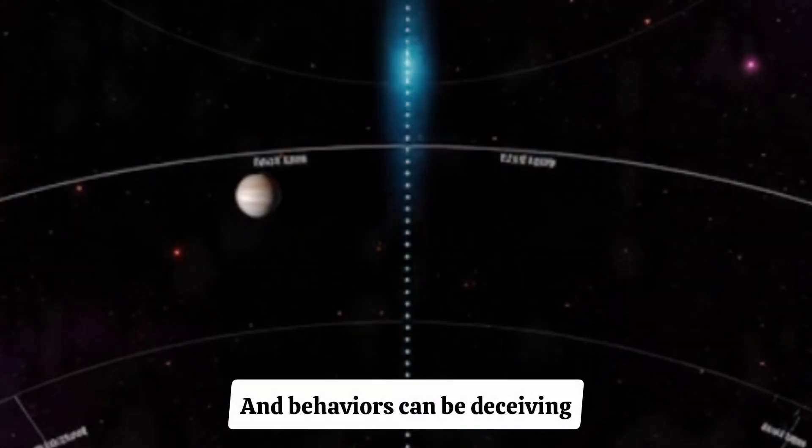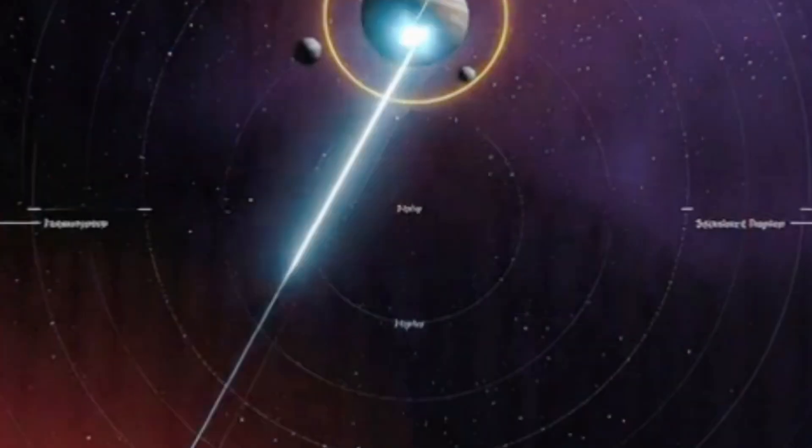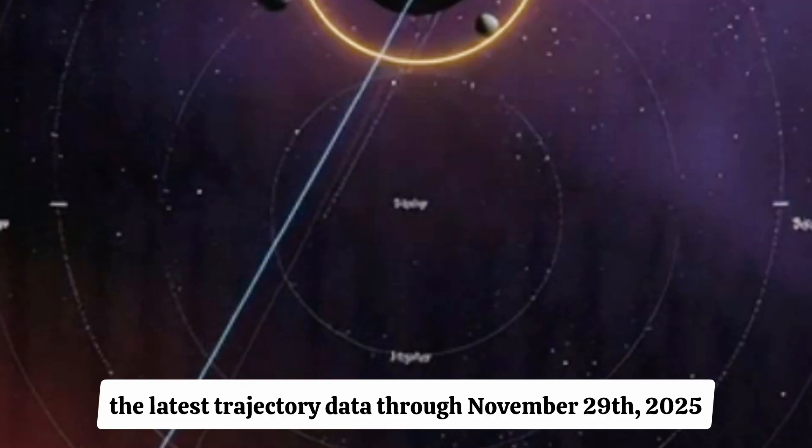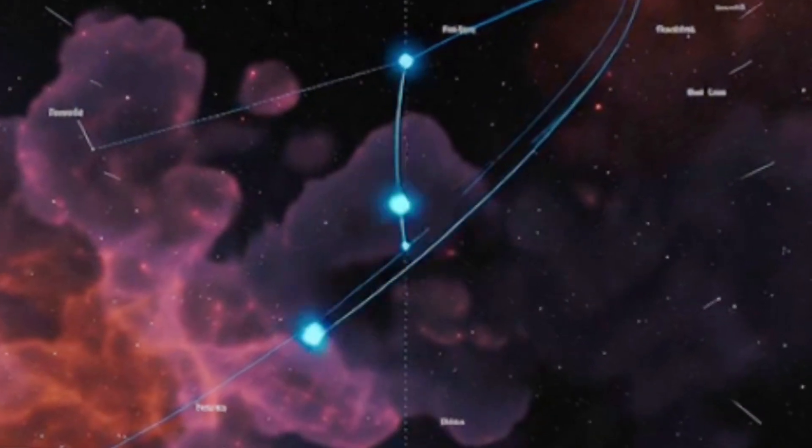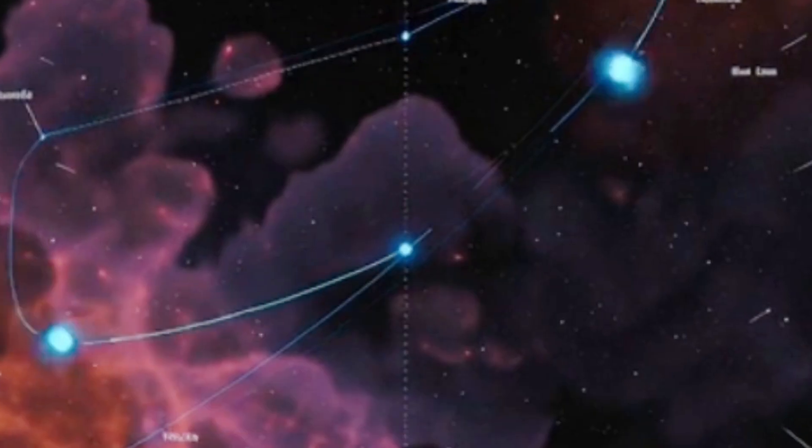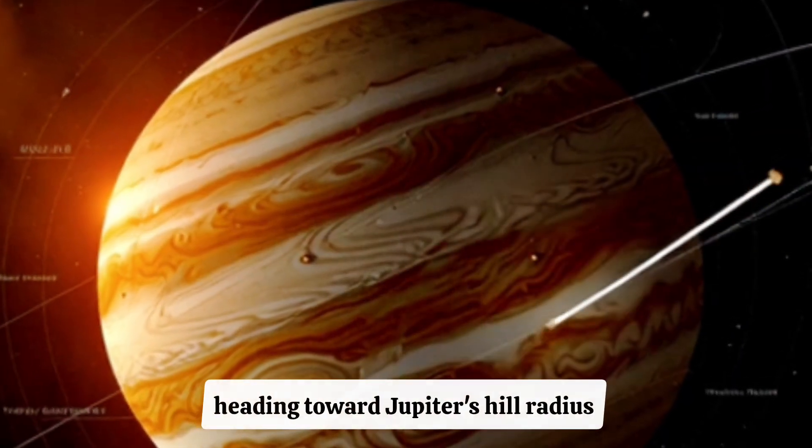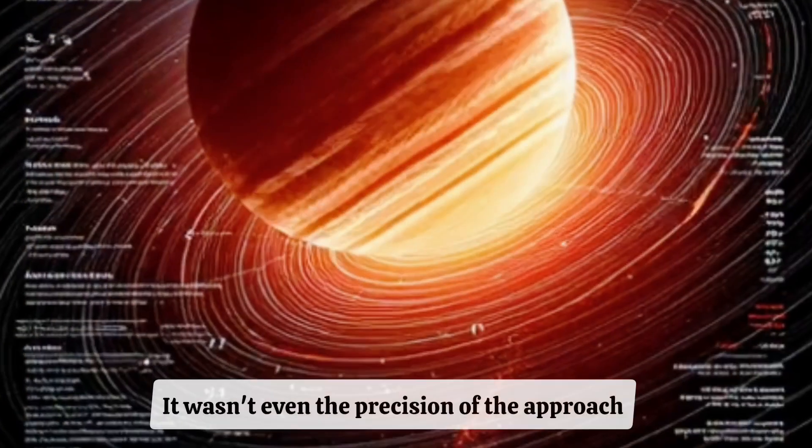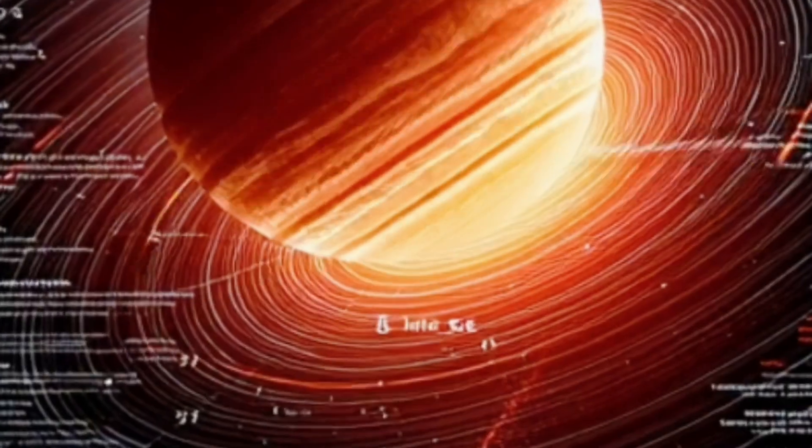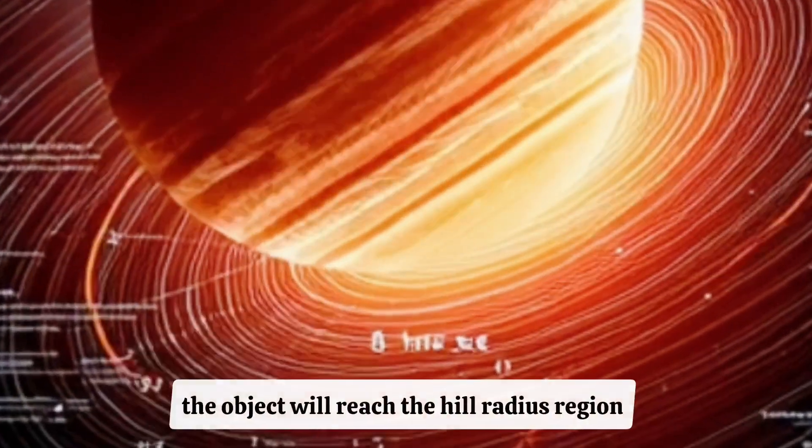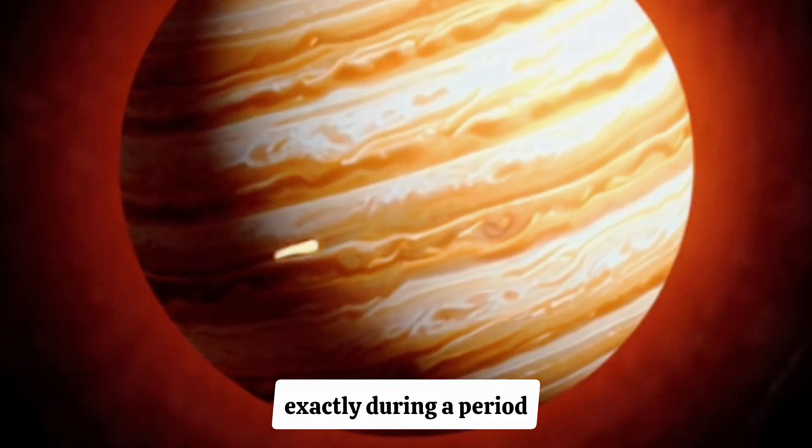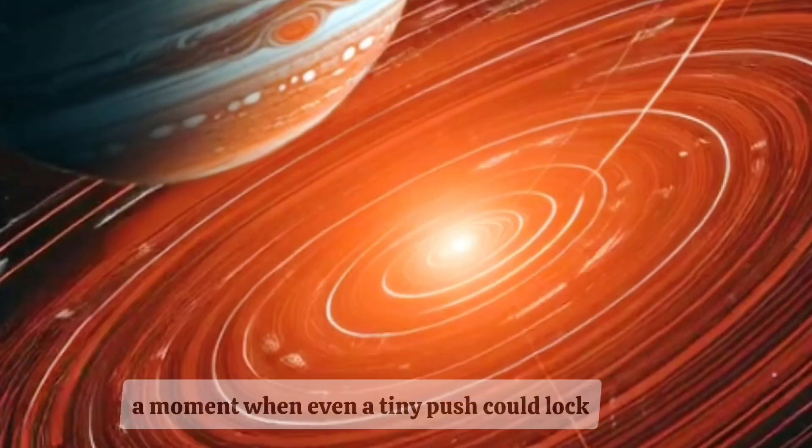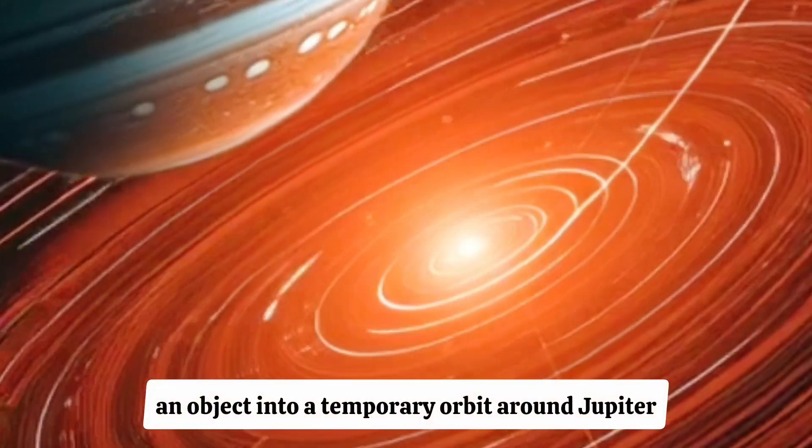And behaviors can be deceiving. But here's where things shift from strange coincidence to deeply concerning. Because as astronomers continued analyzing the latest trajectory data through November 29th, 2025, something emerged that wasn't in the earlier models. It wasn't just that 3i divided by Atlas was heading toward Jupiter's hill radius. It wasn't just that it performed a perfect 62,000-mile correction. It wasn't even the precision of the approach. It was the timing. Because based on the new velocity readings, the object will reach the hill radius region exactly during a period when Jupiter's gravitational alignment is ideal for what NASA calls a low-energy capture window. A moment when even a tiny push could lock an object into a temporary orbit around Jupiter.